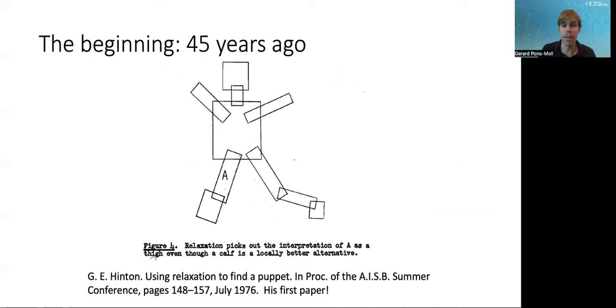Interestingly, by a paper from Hinton in which he had this puppet based on rectangles and he was trying to fit this puppet to key points. Basically the argument of the paper is that if you try to fit every rectangle independently, it's going to be very ambiguous. But if you consider all the rectangles jointly in a holistic manner, then basically you can have a better interpretation of where the puppet lies within these key points. This was actually his first paper.